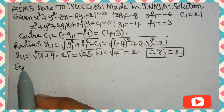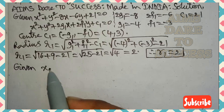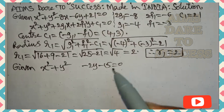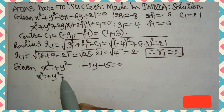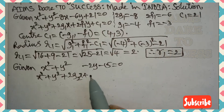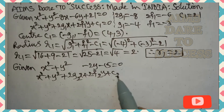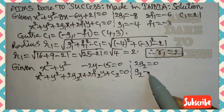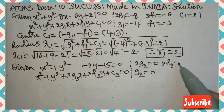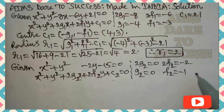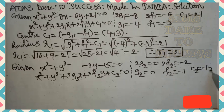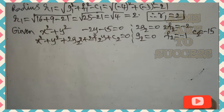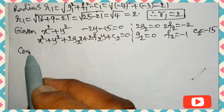The second circle is x² + y² − 2y − 15 = 0. There is no x term, so we write it as 0. Comparing with x² + y² + 2g₂x + 2f₂y + c₂ = 0: the x-coefficient gives 2g₂ = 0, so g₂ = 0. The y-coefficient gives 2f₂ = −2, so f₂ = −1.